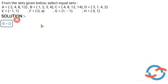So B is equal to D. C is equal to set of 4, 8, 12, 14.